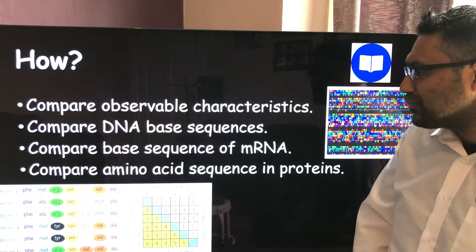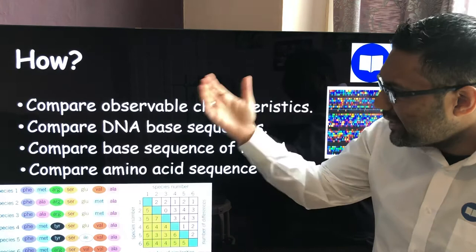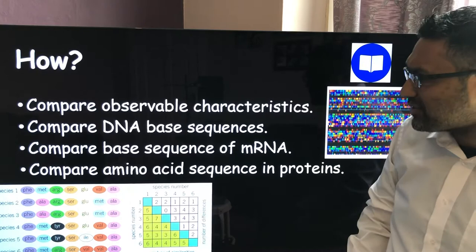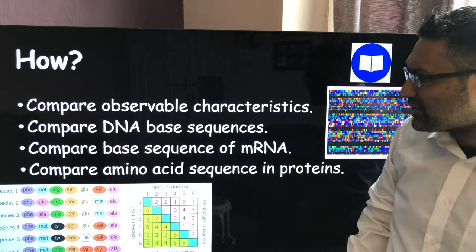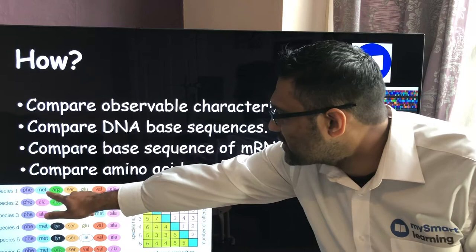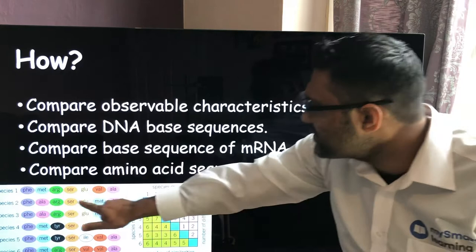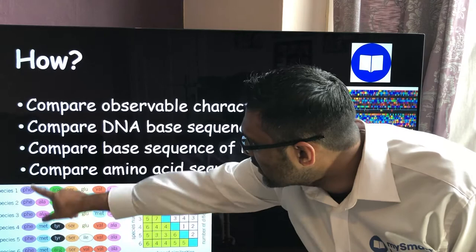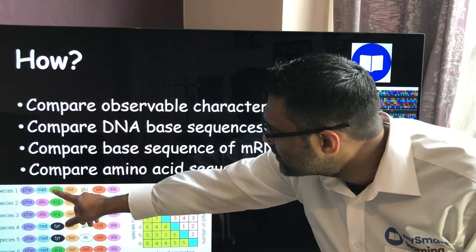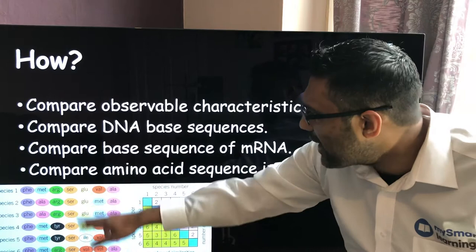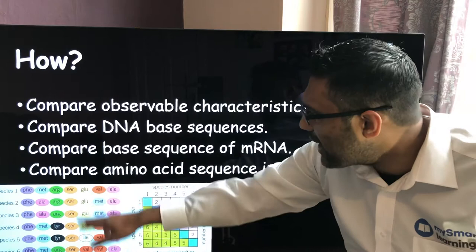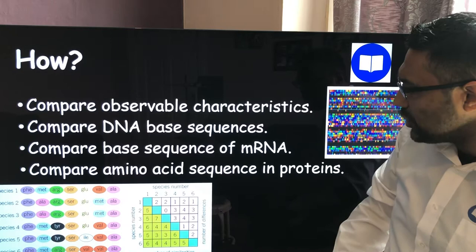Looking at the amino acid sequence, you can compare different species. There are six different species shown with their amino acid sequences — for instance, species one has methionine, arginine, cysteine in sequence. You can see how similar they are across species. All of them share the same first amino acid, but at the second position species two and three differ from the others. So species one, three, four, five, and six are more similarly related to each other, while species two and three appear more closely related to each other.